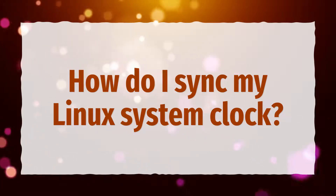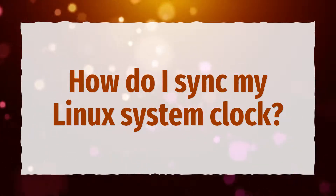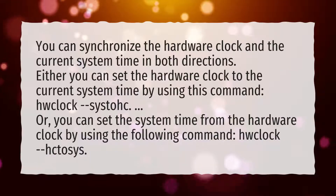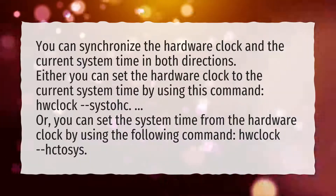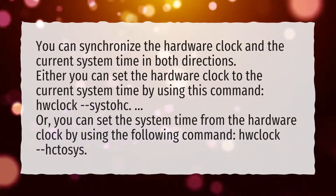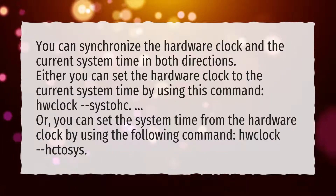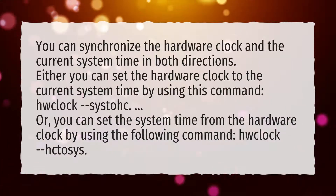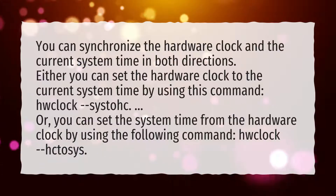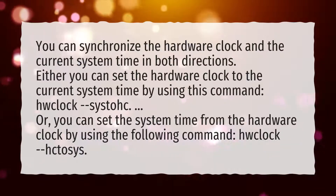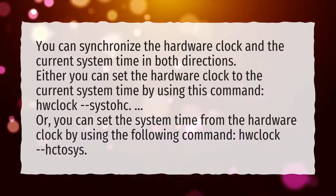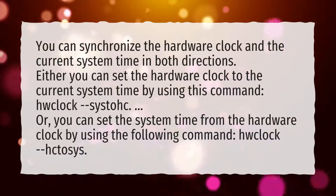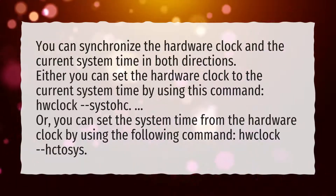How do I sync my Linux system clock? You can synchronize the hardware clock and the current system time in both directions. Either you can set the hardware clock to the current system time by using this command: hwclock --systohc. Or you can set the system time from the hardware clock by using the following command: hwclock --hctosys.